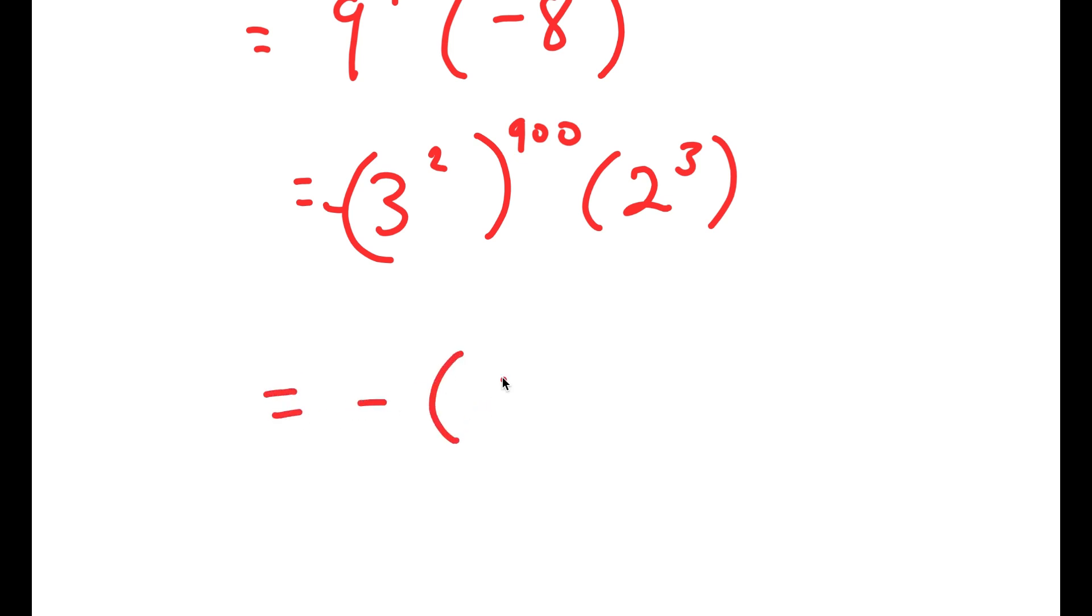So I get negative 3 to the power of 1,800 times 2 to the power of 3, and this is the simplest form that we can get.